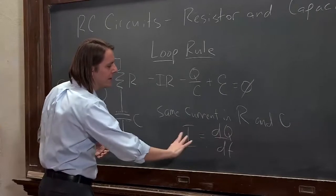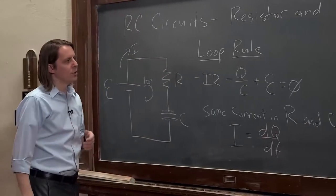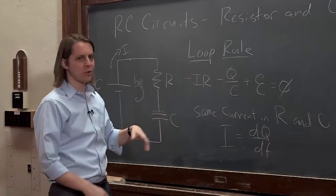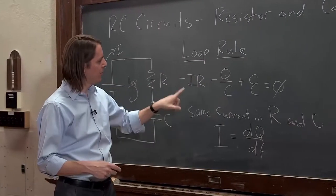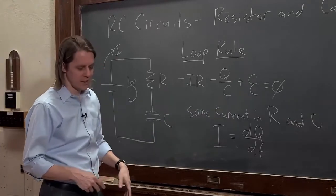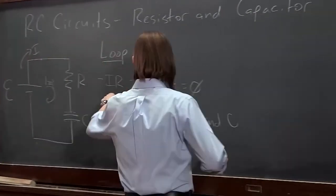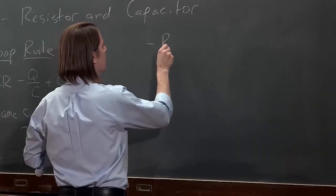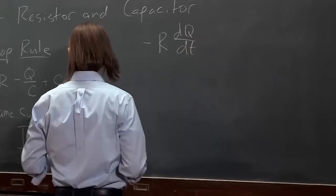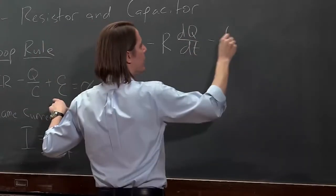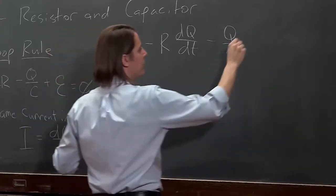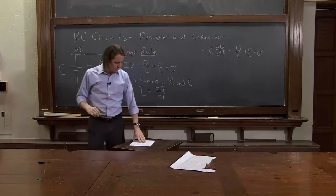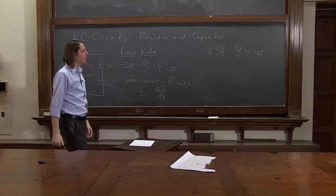So we do actually have an equation to relate these two things. So what we're going to do is instead of writing this in terms of i and q, current and charge, we're going to write it just in terms of charge. Because we can replace this i with dq dt. So let's do that. That's minus ir. So that's going to be minus R dq dt minus q over c plus emf equals 0. And now we have to solve that.